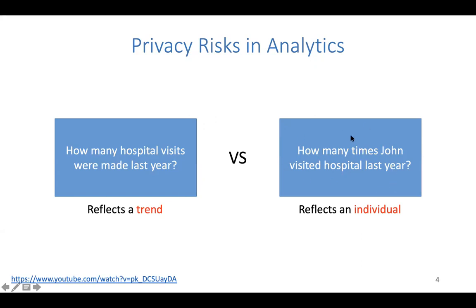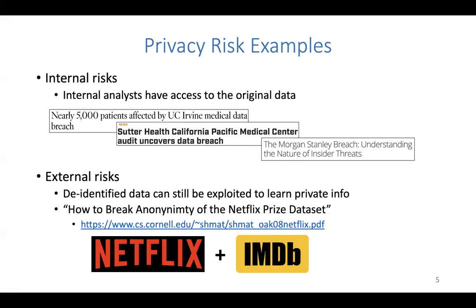The first aggregate question is probably okay because we need to study trends to develop drugs, make policies, or assign budgets. But do we really need information about a specific individual? Probably not. So we want to allow aggregate queries while avoiding individual-targeted queries — that's the motivation.